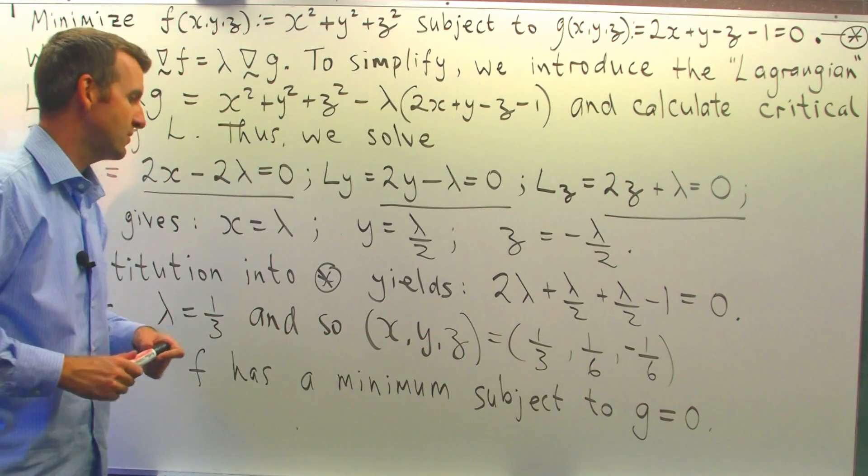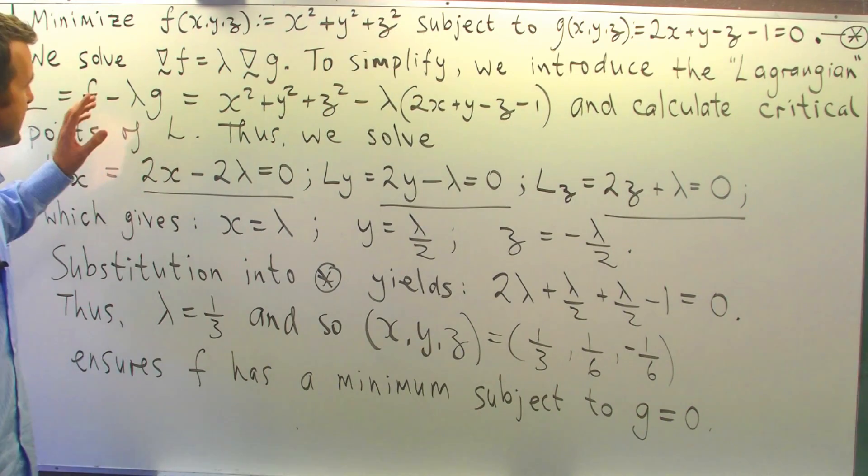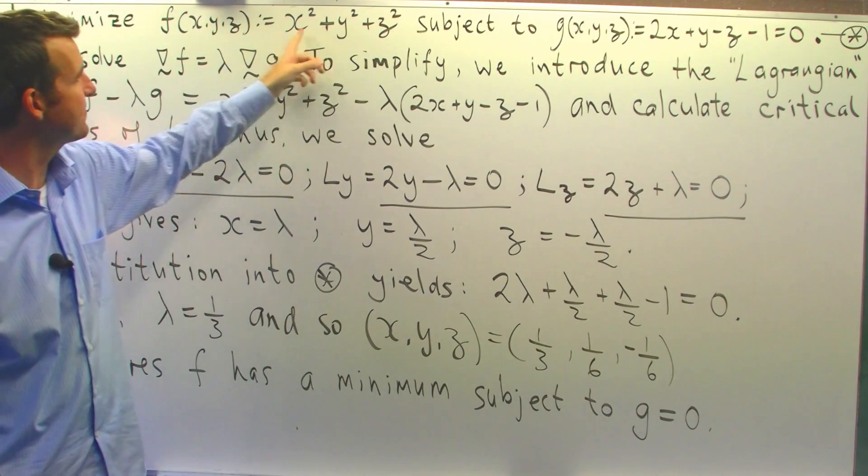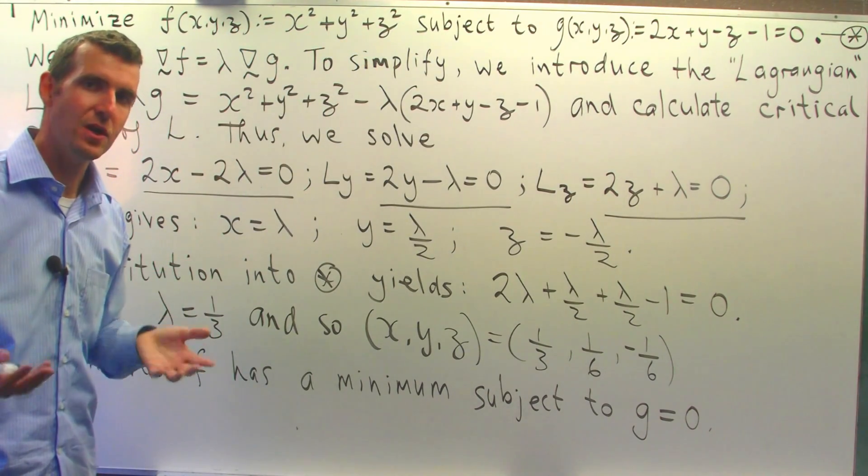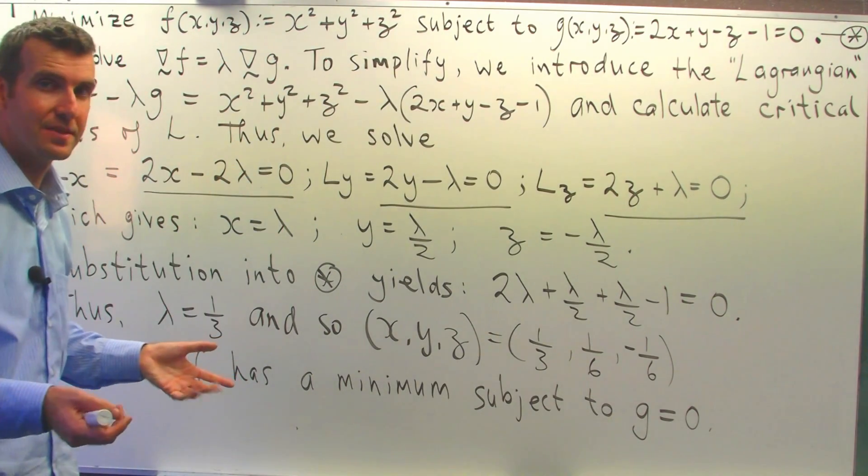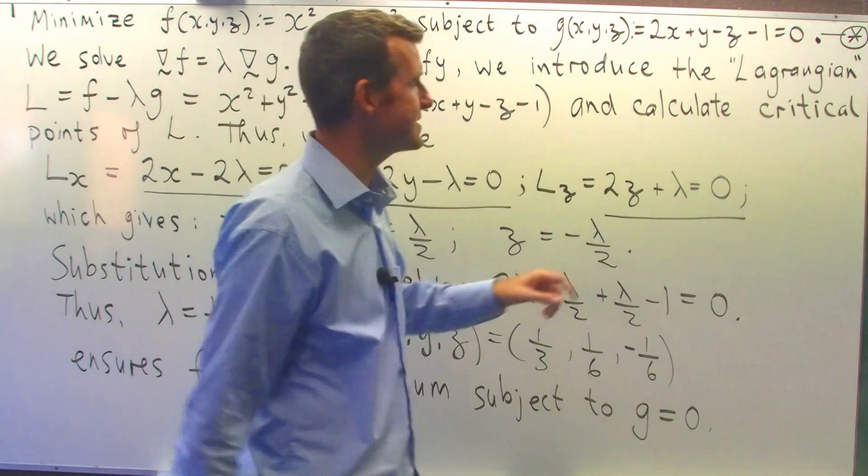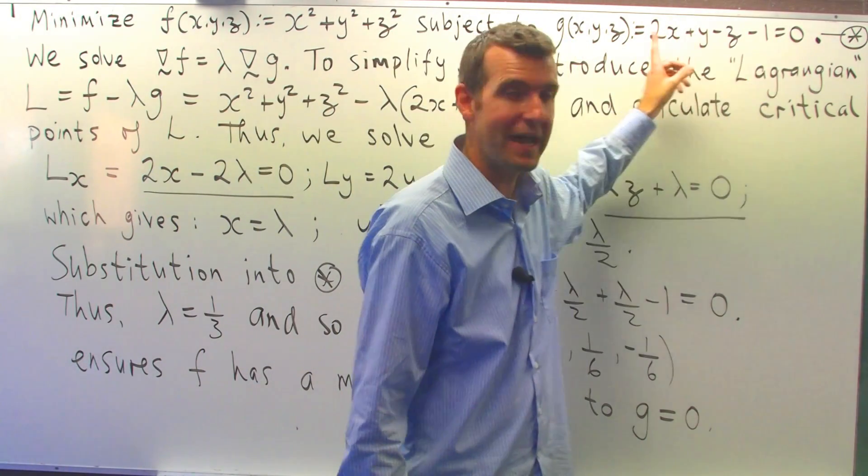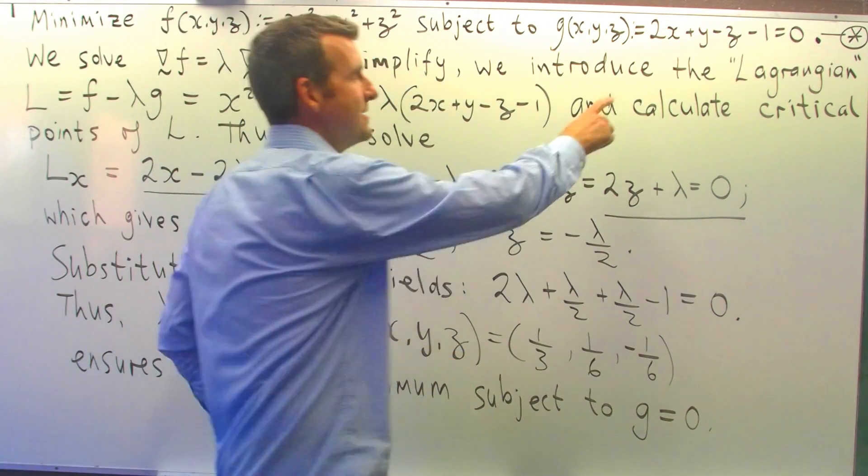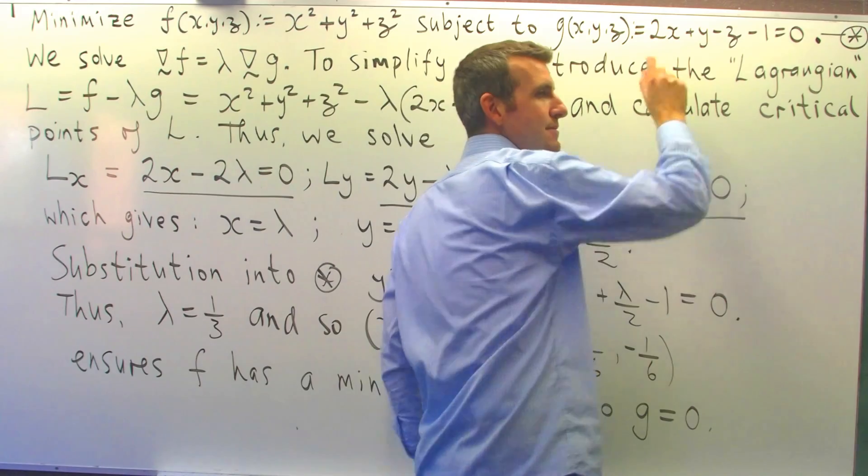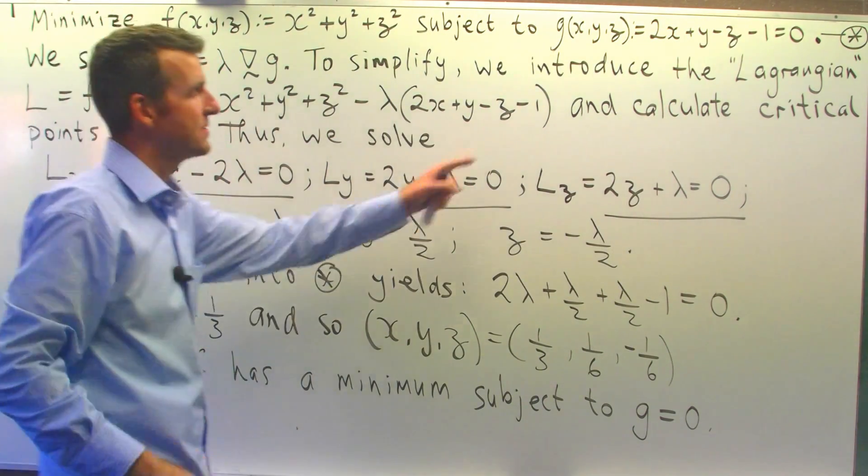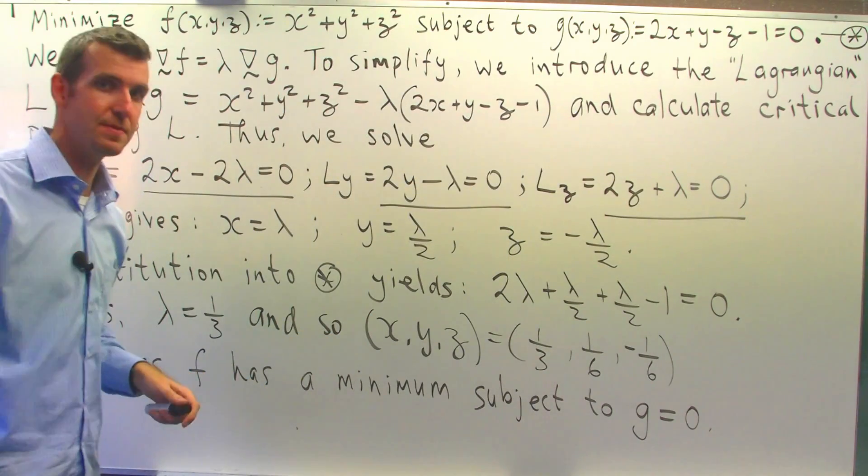Now some of you may be asking, well, how do I know it's a minimum? Well, if we think about geometrically what this function means, it's the square of the distance between any point x, y, z and the origin. Now that point x, y, z also has to lie on this plane. This is the equation of a plane. So think about this plane, any point on that plane, and calculating the minimum distance from this plane to the origin. There's got to be a minimum distance.